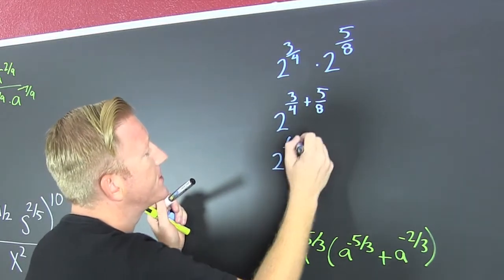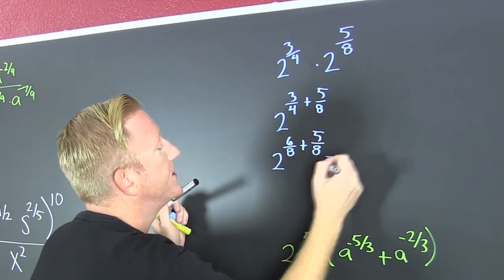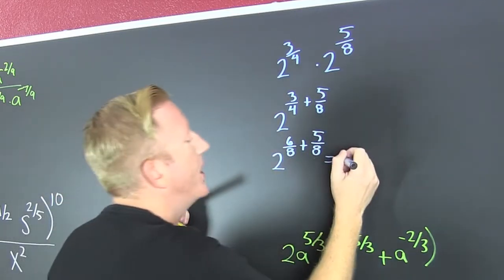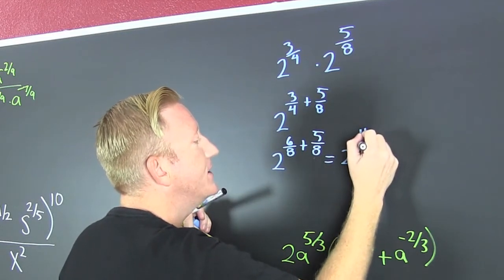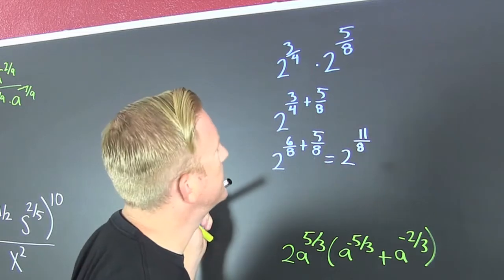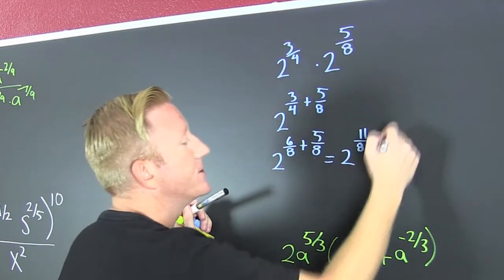Yeah, 6 eighths is the same as 3 fourths plus 5 eighths. Now that I got a common denominator, I can add their numerator. That's 2 to the 11 eighths. And since they gave it to me in exponents, I'm gonna give it back to him in exponents.